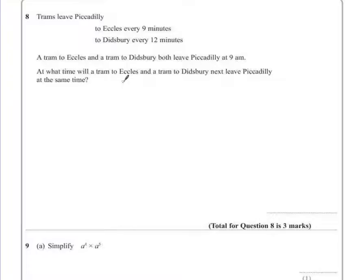This question is looking for a combination of time and what's called the lowest common multiple. We're looking for a time that both trams will leave at the same time. So the easiest way to do this is to list the times when each tram will be leaving Piccadilly.